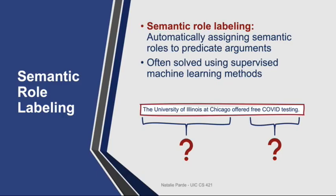Semantic role labeling is the process of automatically assigning semantic roles to the arguments of different predicates in a sentence. It is generally performed using supervised machine learning methods, which are trained on resources like FrameNet and PropBank.